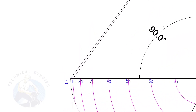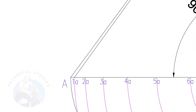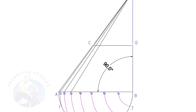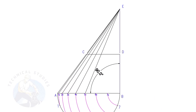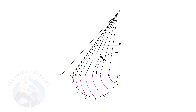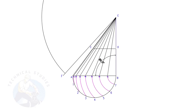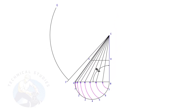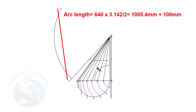Draw lines from 1A, 2A, 3A, etc. to point E. Draw line EF — this is a reference line only. Draw arc FG; the length shall be a little more than the half circumference of the bottom diameter. Again, this arc is only for reference of the half circumference length.